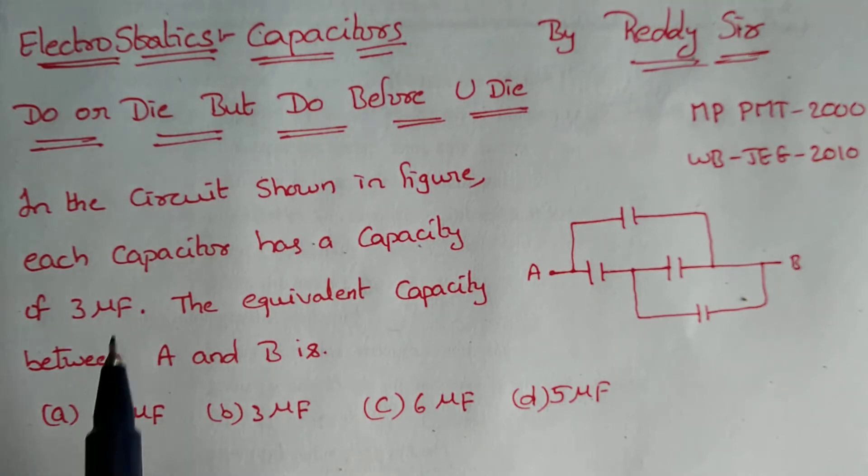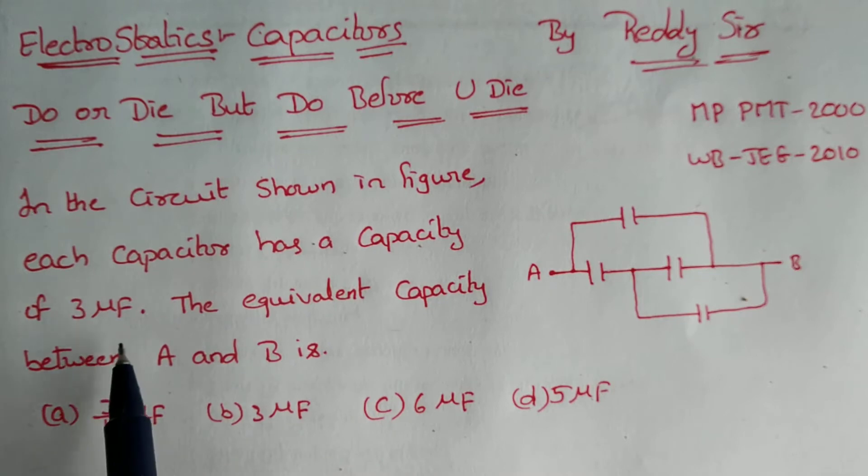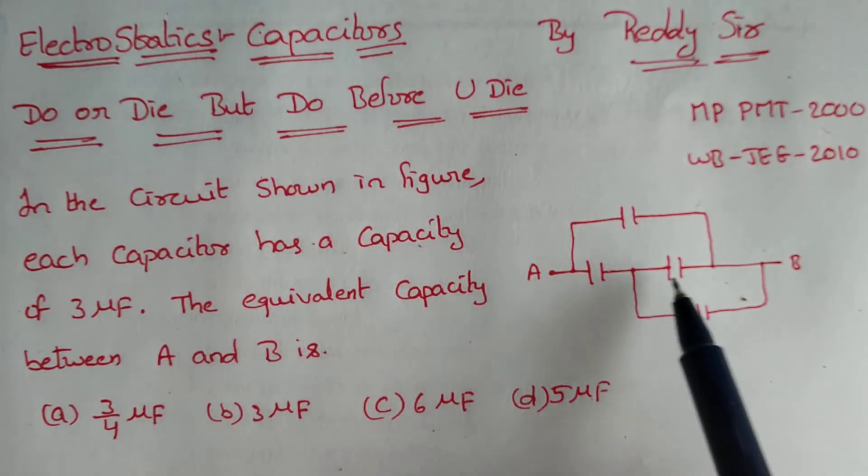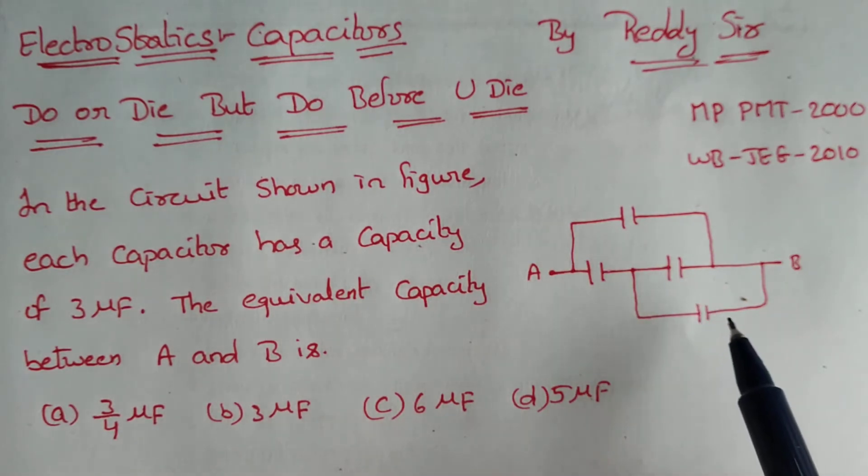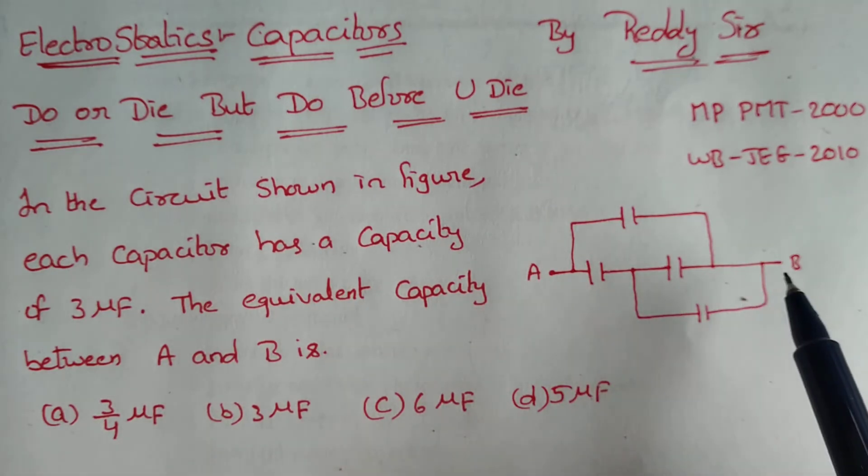Now look at the question. In the circuit shown in the figure, each capacitor has a capacity of 3 microfarad and the equivalent capacity between A and B is. Given each capacitor has a capacitance of 3 microfarad, we have to find the equivalent capacitance between A and B.